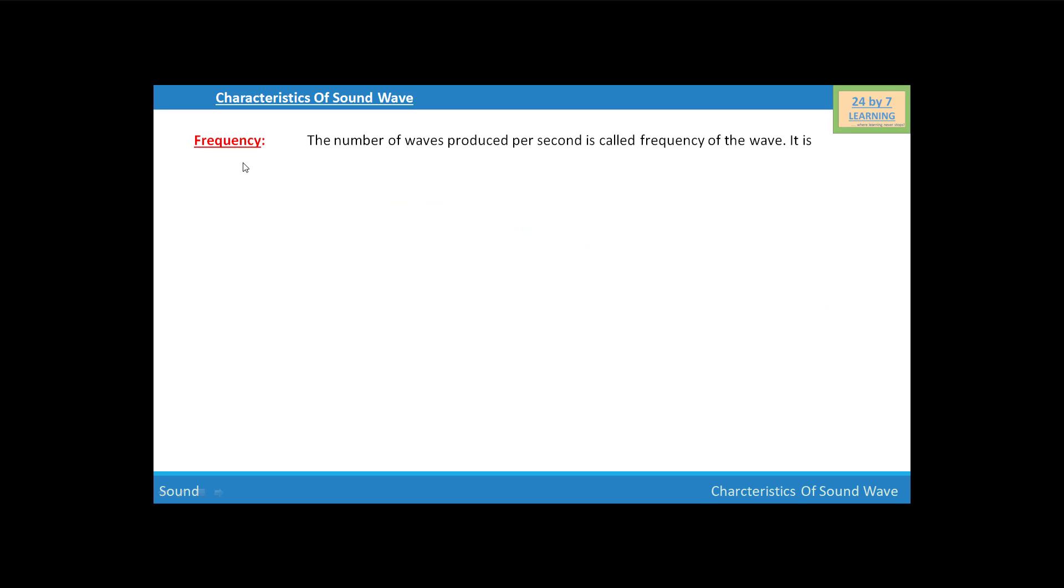Next quantity is frequency. The number of waves produced per second is called frequency of the wave. It is equal to the number of compressions or rarefactions crossing a point per unit time. It is represented by small v. Frequency equals the reciprocal of time period, so frequency equals one upon time period or v equals one upon T. The SI unit of frequency is one upon second or second inverse, or more commonly called as hertz.